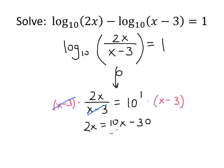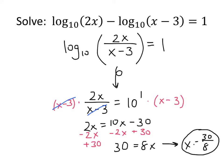I'm going to subtract 2x from both sides, and add 30 to both sides. When I do that, I get 30 equals 8x, and so that means that the x that I'm looking for is 30 divided by 8. That's our answer.